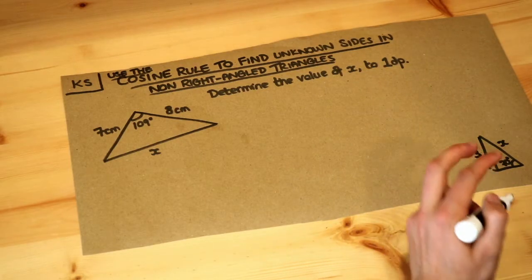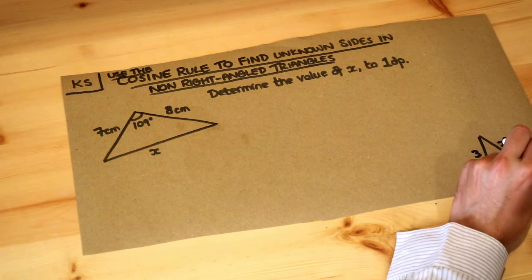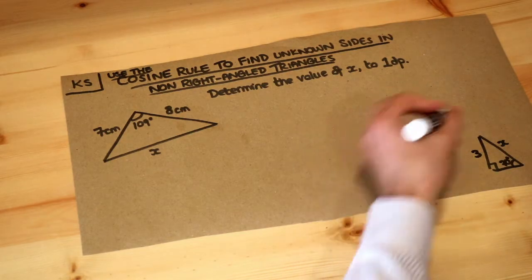We could use trigonometry, SOHCAHTOA if you remember, to find that value of x. So if we had two sides involved and an angle within a right-angle triangle, we could use SOHCAHTOA.